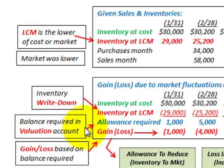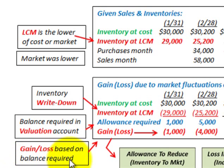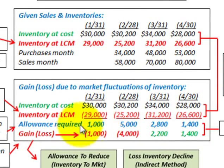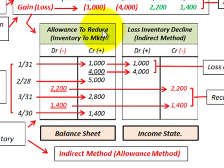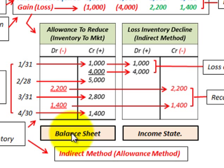This is the balance required in our valuation account. We're looking at an allowance account or valuation account, and we have to determine any gain or loss from the markdown of our inventory. The allowance account is used with the indirect method for writing down inventory. It is a contra-asset account that reduces the inventory balance on the balance sheet.